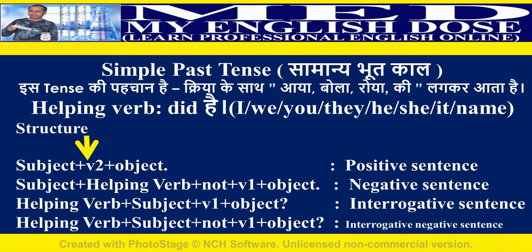Simple past tense helping verb is 'did'. Use 'did' with all nouns or pronouns. Positive sentence structure: subject plus second form of a verb plus object. Negative: subject plus helping verb plus not plus first form of a verb plus object. Interrogative: helping verb plus subject plus first form of a verb plus object. Interrogative negative: helping verb plus subject plus not plus first form of a verb plus object.